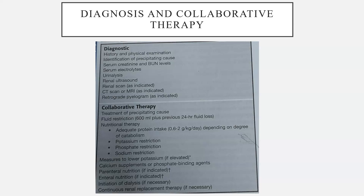The collaborative therapy focuses first on treatment of the precipitating cause. Fluid restriction is done in the initial phase, giving about 600 ml plus the previous 24-hour fluid loss. Nutritional therapy includes adequate protein intake of 0.6 to 2 grams per kg per day depending on the degree of catabolism, along with potassium restriction, phosphate restriction, and sodium restriction. Measures to lower potassium if elevated, calcium supplements or phosphate binding agents, parenteral or enteral nutrition if indicated, initiation of dialysis, and continuous renal replacement therapy if necessary.